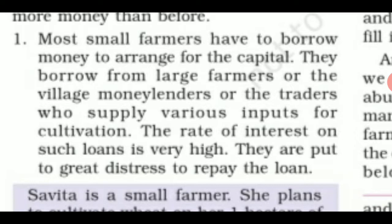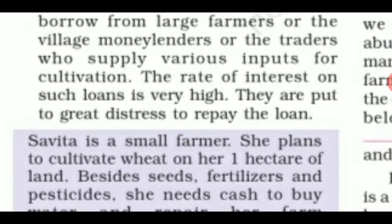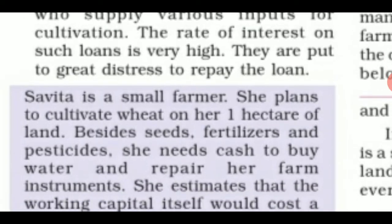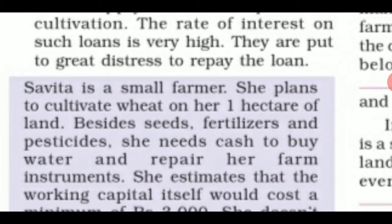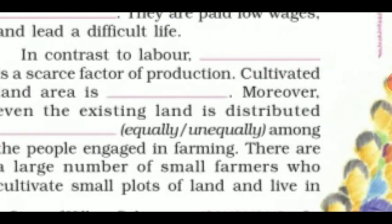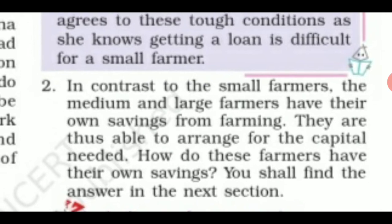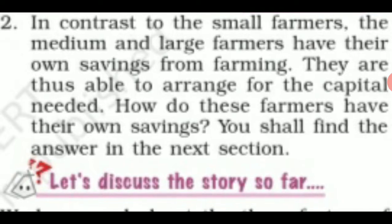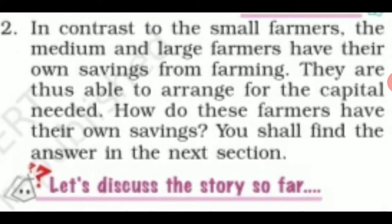Small farmers arrange the money by borrowing from various sources — from moneylenders, traders, or the sahukar — and in return they have to pay interest. The rate of interest on such loans is very high. In comparison to the small farmers, small farmers arrange money by borrowing it from various sources.